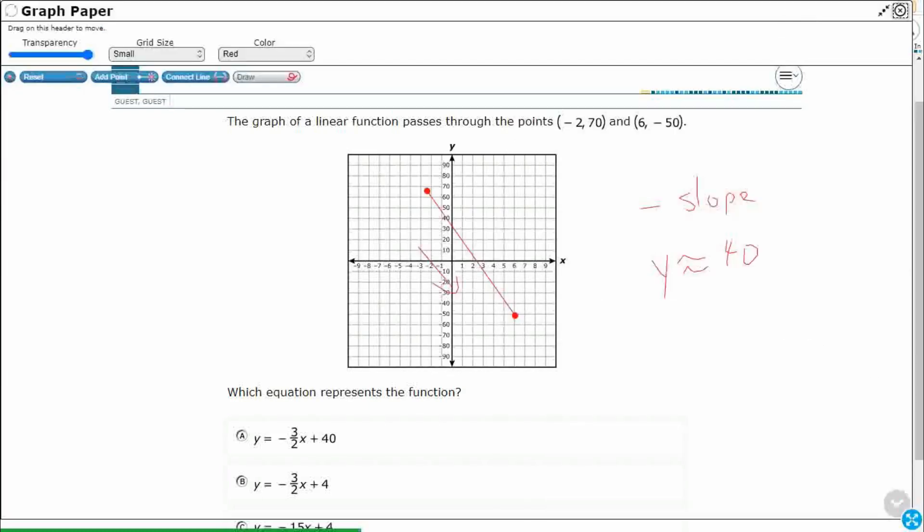We're going to open this back up. The m equals the change in y over the change in x. Let's just make this x1, y1, x2, y2. You could swap those if you want to. Just make sure x1 is always with y1, x2 is always with y2. So, y2 is negative 50 minus 70, and then I've got this 6 minus negative 2.